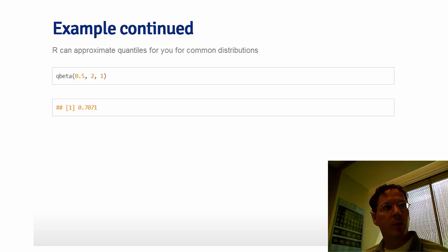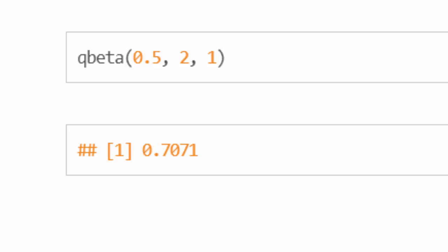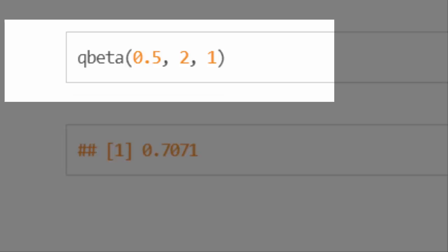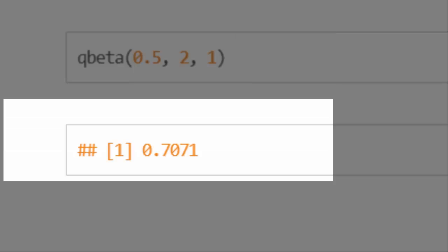We work with quantiles a lot, especially from the normal distribution. In R, putting q in front of the density name gives quantiles — so qbeta gives the quantile of the beta distribution. Plugging in 0.5 with parameters 2 and 1 gives 0.71, exactly as we calculated. Note that R takes the quantile argument as a proportion, so use 0.5, not 50.